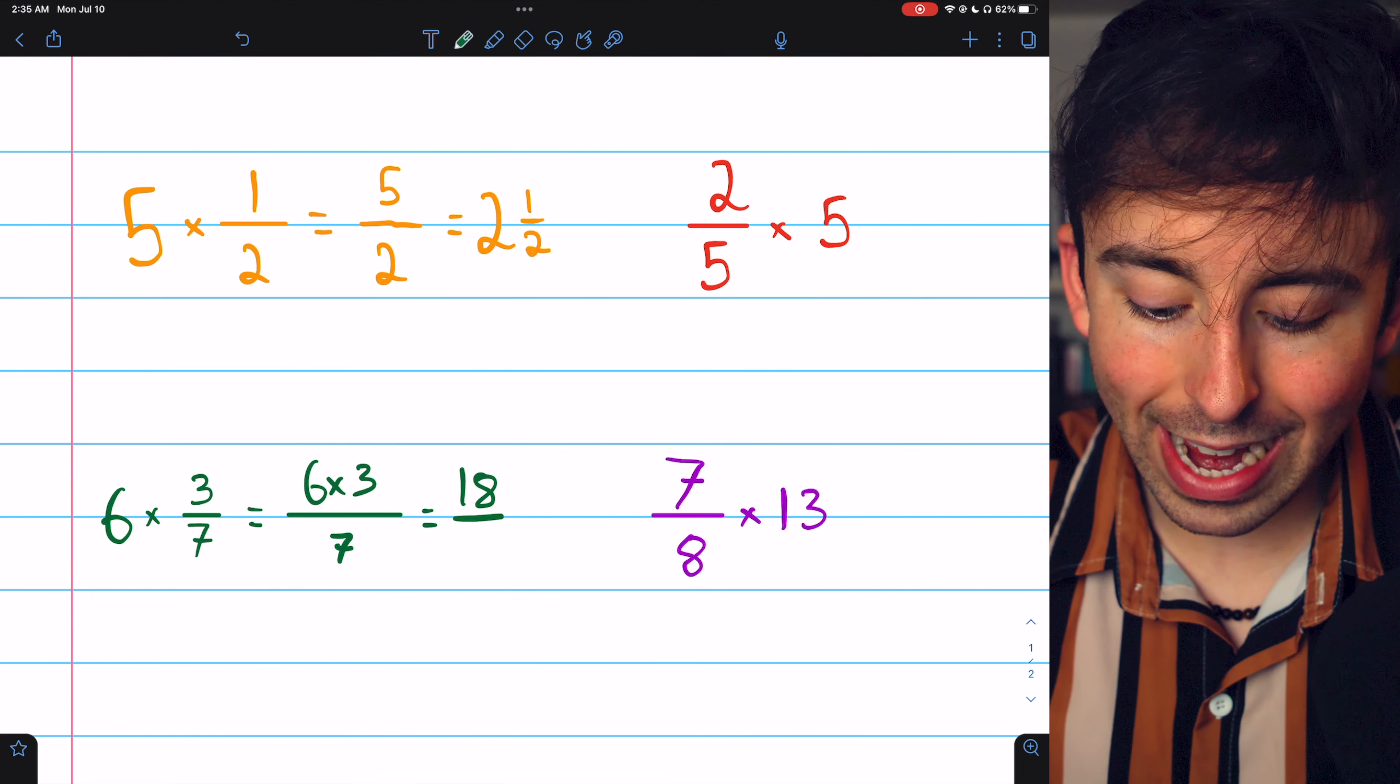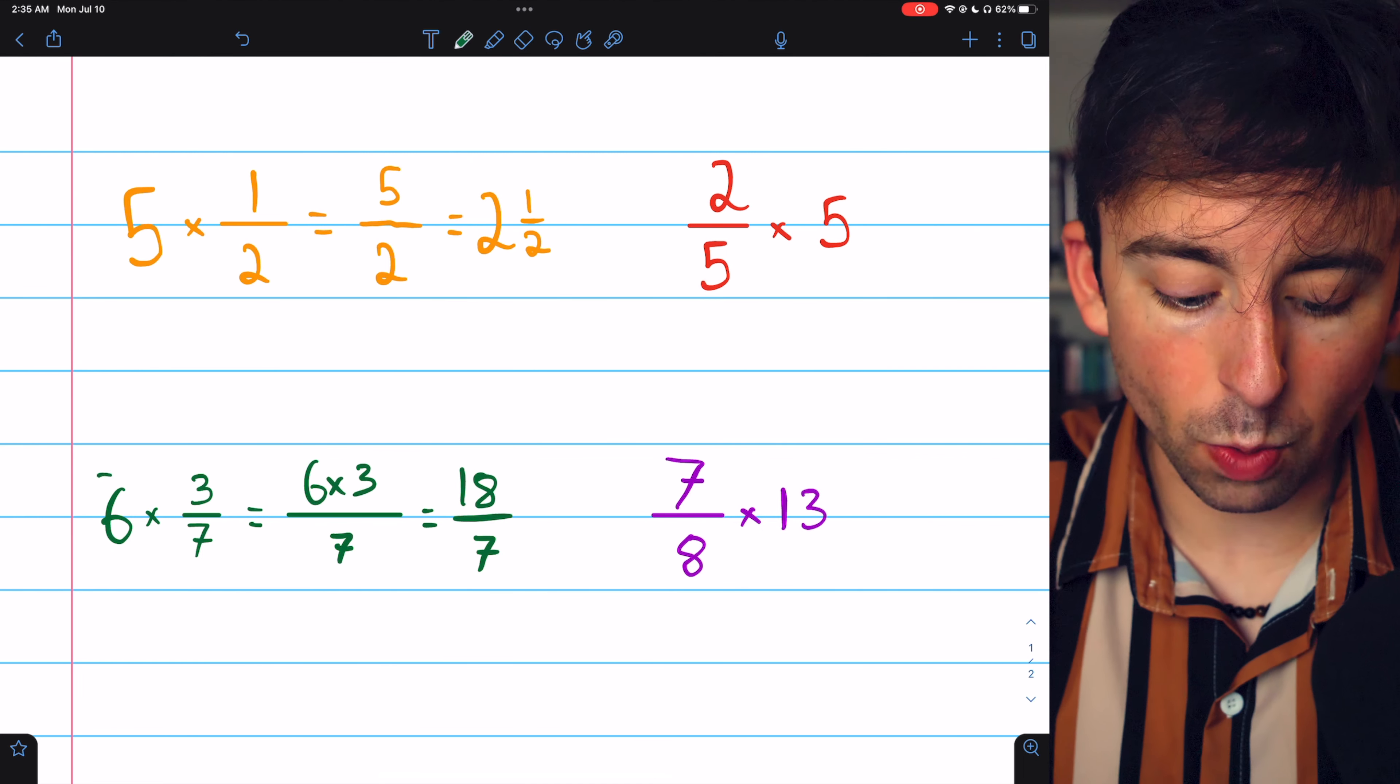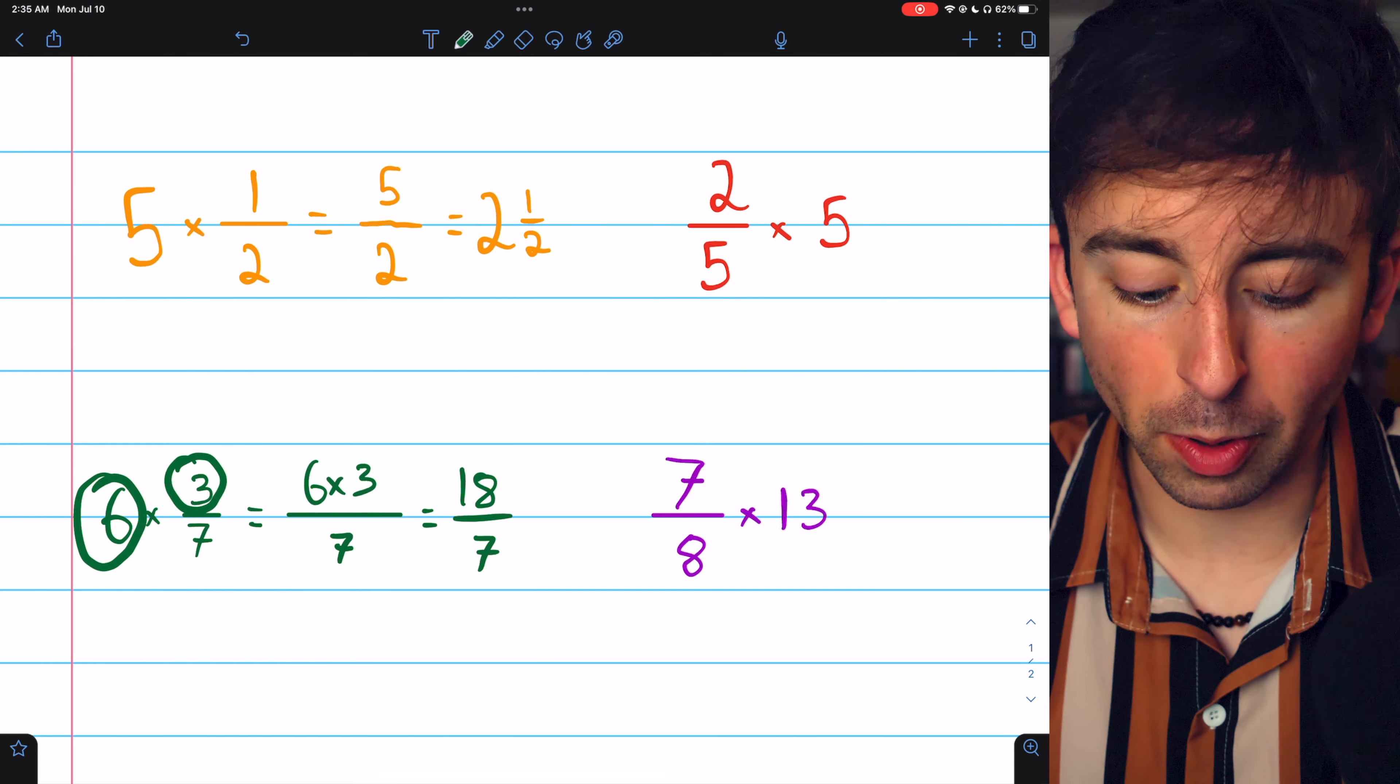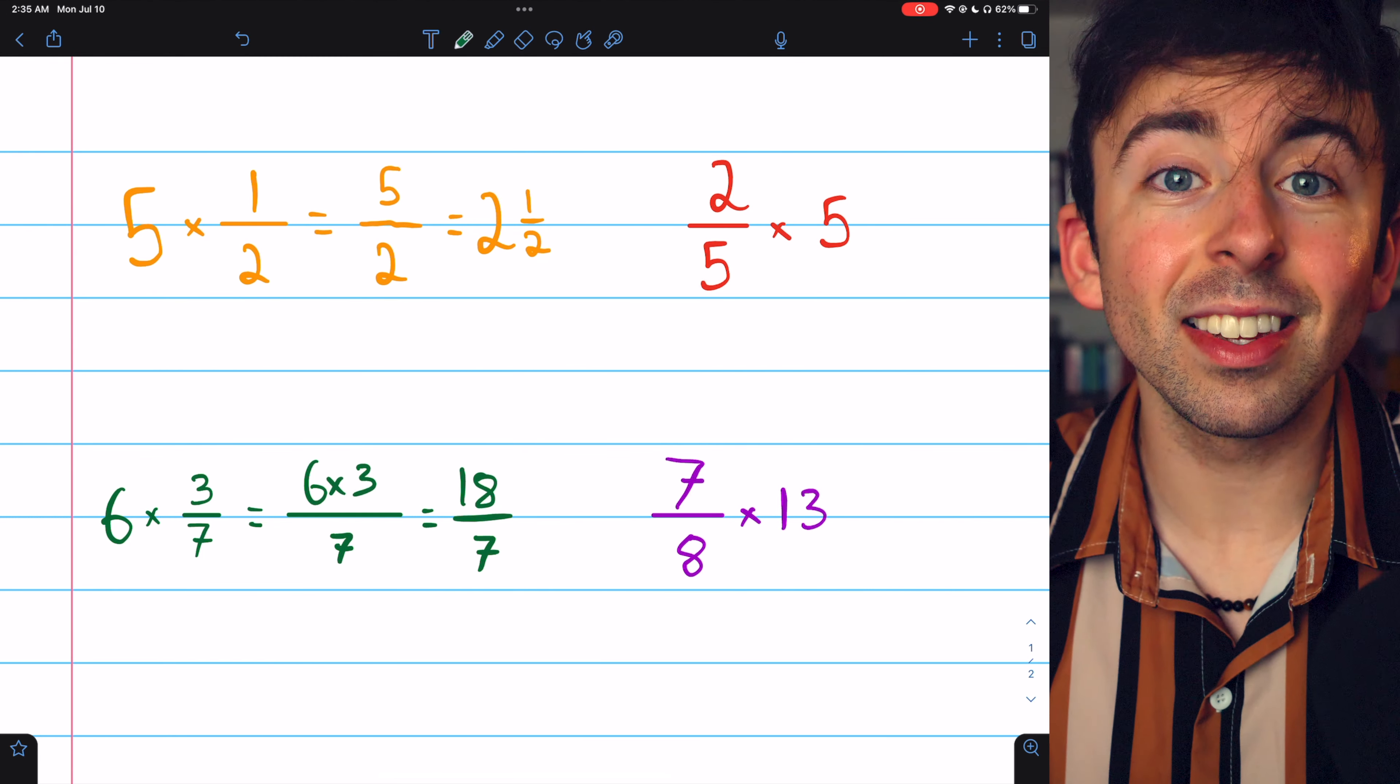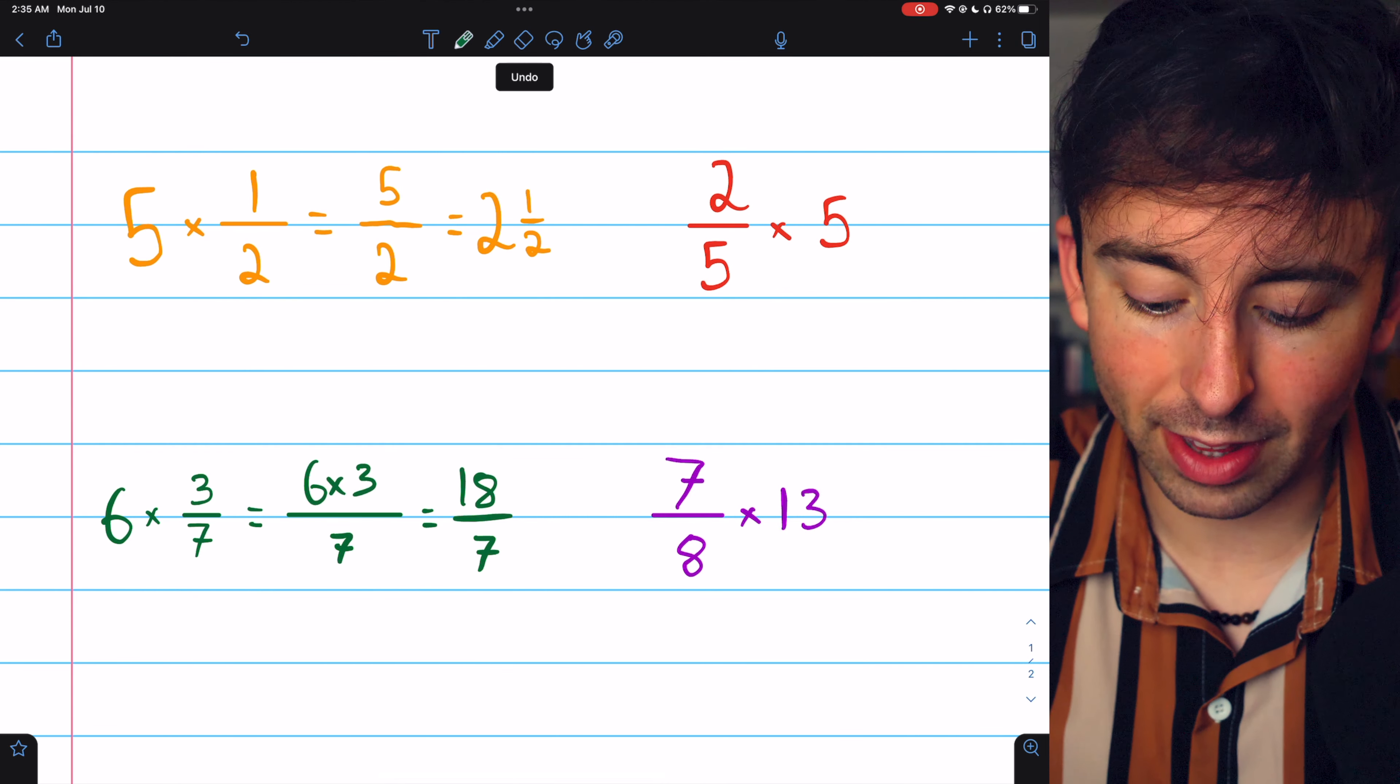Again, all we have to do is multiply the whole number by the numerator. We have 3 sevenths 6 times over. That's 18 sevenths.